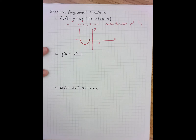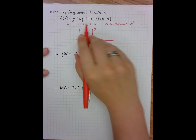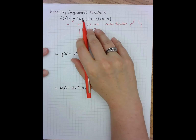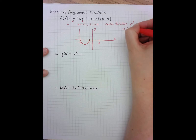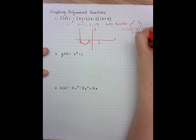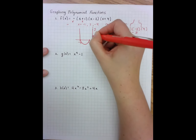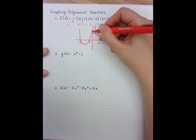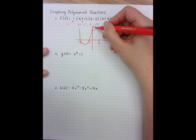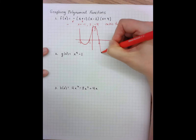I also know that once it goes down it has to turn and come back up to reach the x-intercept at negative one. I can figure out my y-intercept by multiplying the constants in each of the parentheses with the negative sign: negative one times one times negative two times four gives me positive eight. So I'll scale the y-axis as two, four, six, eight.